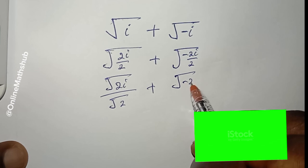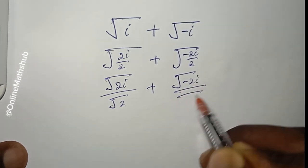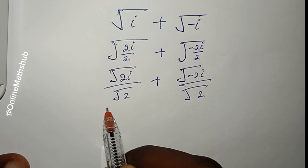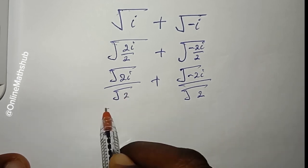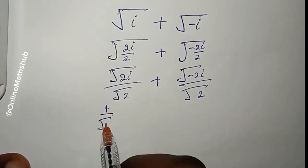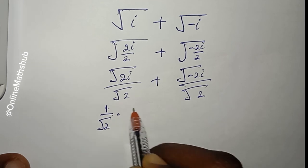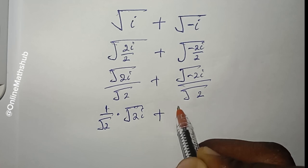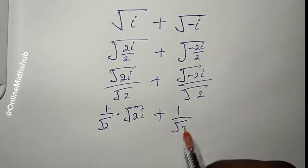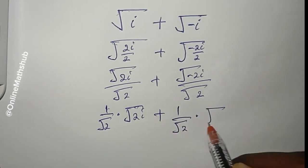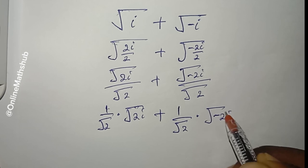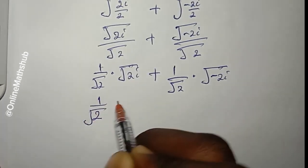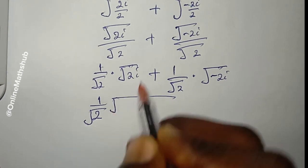I'm going to factorize out 1/√2, so I have (1/√2) multiplied by √(2i), and the same on the other side: (1/√2) multiplied by √(-2i).